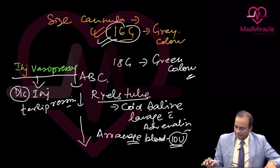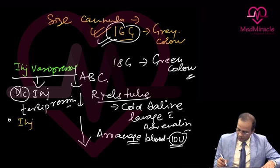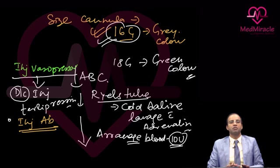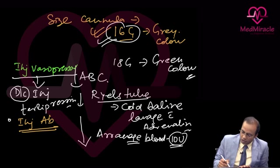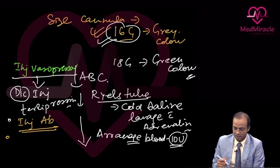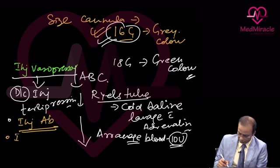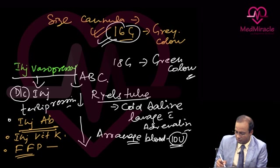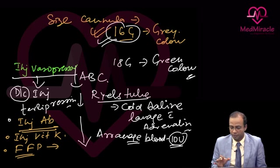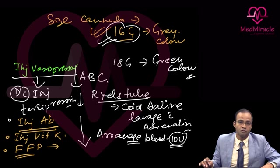Due to chances of gram-negative septicemia in hepatic cell failure, give injection antibiotics with gram-negative coverage. Hepatic cell failure is also associated with Vitamin K abnormality due to absorption failure, so give injection Vitamin K. Also start fresh frozen plasma infusion immediately, as FFP is rich in coagulant factors that can prevent coagulation failure which causes bleeding in variceal rupture.